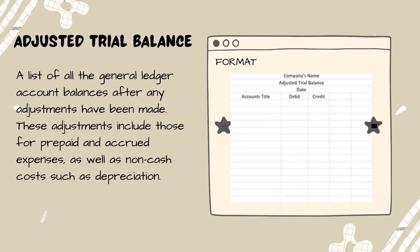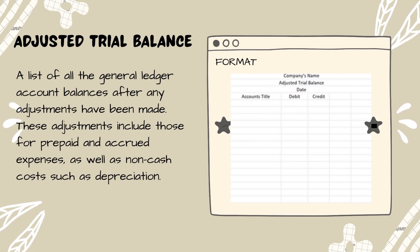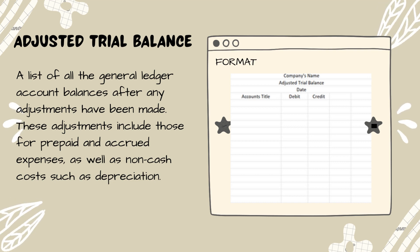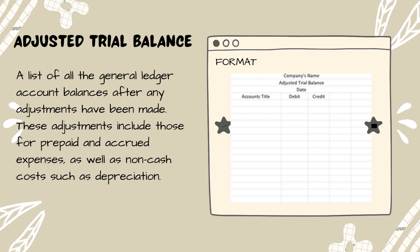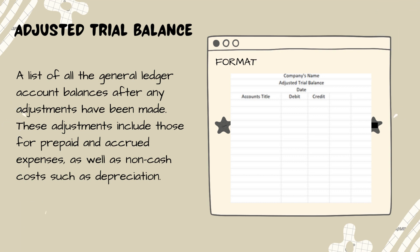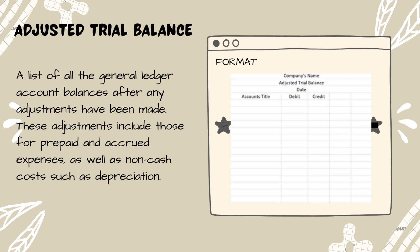Adjusted trial balance: a list of the general ledger account balances after any adjustments have been made. These adjustments include those for prepaid and accrued expenses as well as non-cash costs such as depreciation. The purpose of the adjusted trial balance is to ensure that the total debit balance in the general ledger equals the total credit balance in the general ledger.